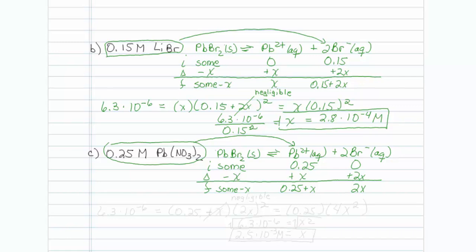Once again, 6.3 times 10 to the minus 6, which is my Ksp, is going to be equal to 0.25 plus x times 2x quantity squared. Once again, this could get into very horrible math, but let's make the assumption that this is negligible. Let's try it again. See if it works out for us. So I can simplify this to 0.25 times 4x squared.